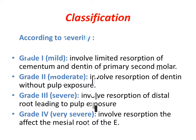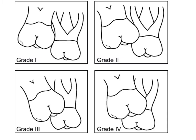This figure demonstrates the four grades of severity of ectopic eruption, starting from grade 1, the mild form, to grade 4, the more severe or very severe form.